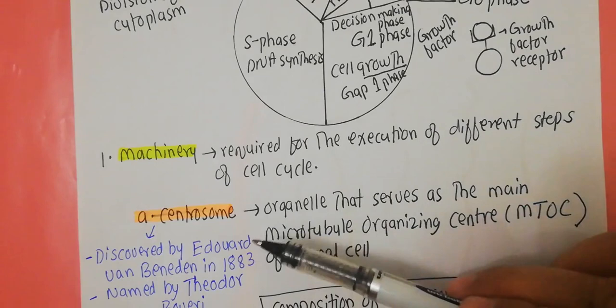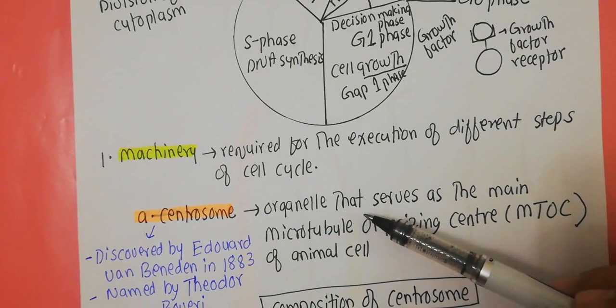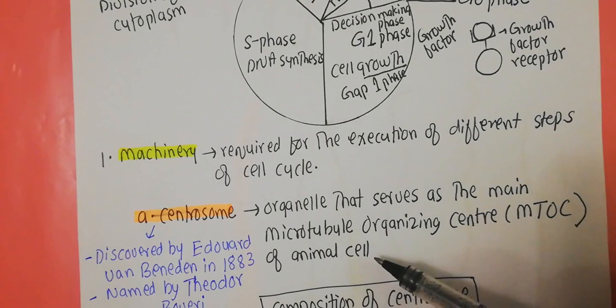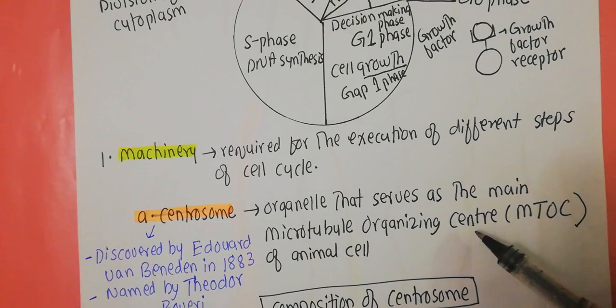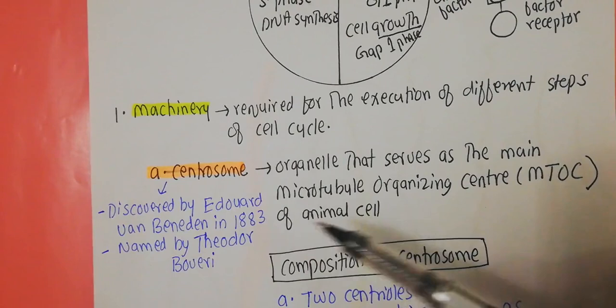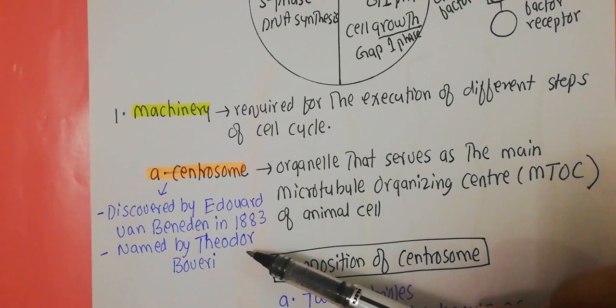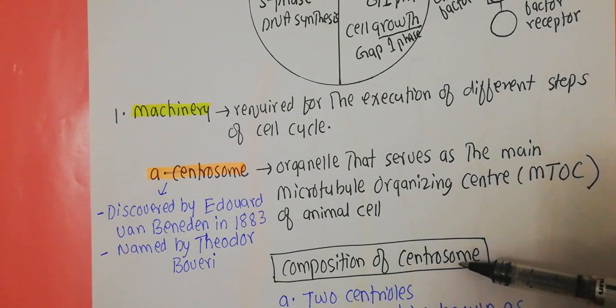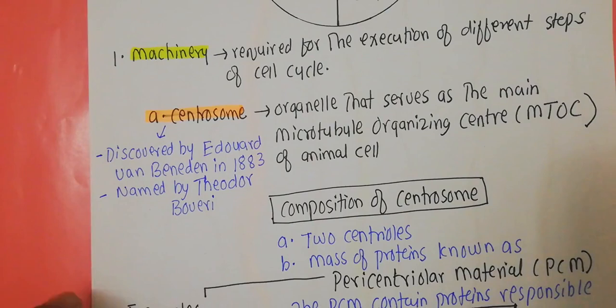If you look at the components of the machinery, the first component is the centrosome. The centrosome is an organelle that serves as the main microtubule organizing center of animal cells, known in short as the MTOC. A little bit of history: centrosomes were discovered by Edward in 1880 and were named by Theodor Boveri. The centrosome is made up of two things: two centrioles, and a mass of protein known as the pericentriolar material.